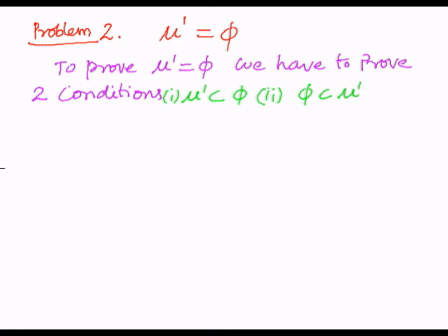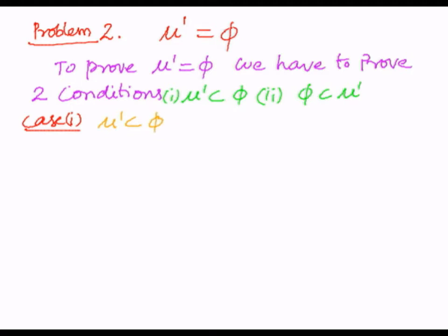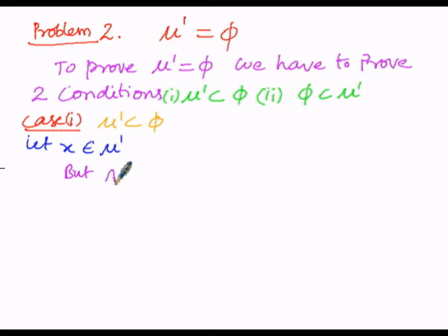Now we are going to consider Case 1. In Case 1, we are going to prove that μ dash is a subset of the empty set φ. Since we are proving it by means of element-wise proof, let us consider one element x that belongs to μ dash. We know the formula: A complement is given by μ minus A, so A must be subtracted from the universal set.